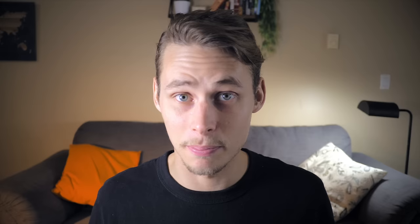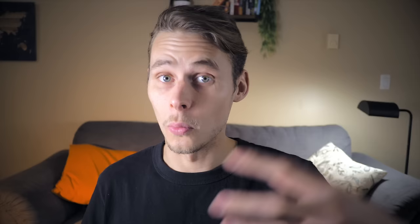Step 7: Prepare the necessary journal entries. This is very important because if we don't post these journals to correct the cash balance in the current month, all of these cash book adjustments would just appear again next time we do the bank rec. Just to be clear, the adjustments on the bank statement side are all timing differences — we can leave these, and they'll correct themselves in the future when the bank records our deposit and when that customer cashes the cheque. We're only posting journal entries for the adjustments that affect our cash book.